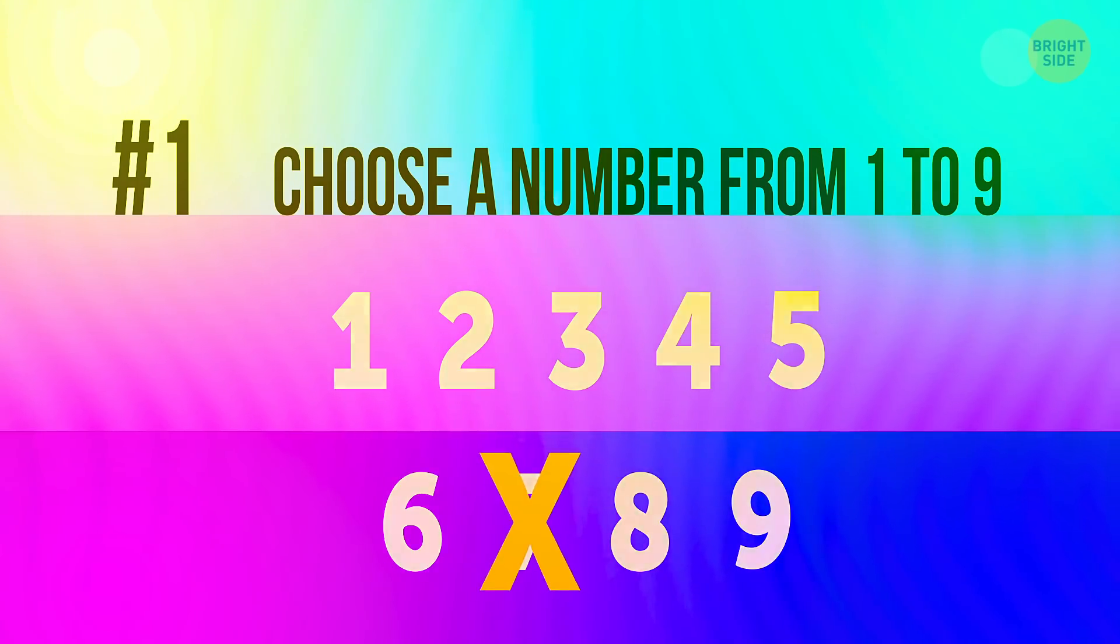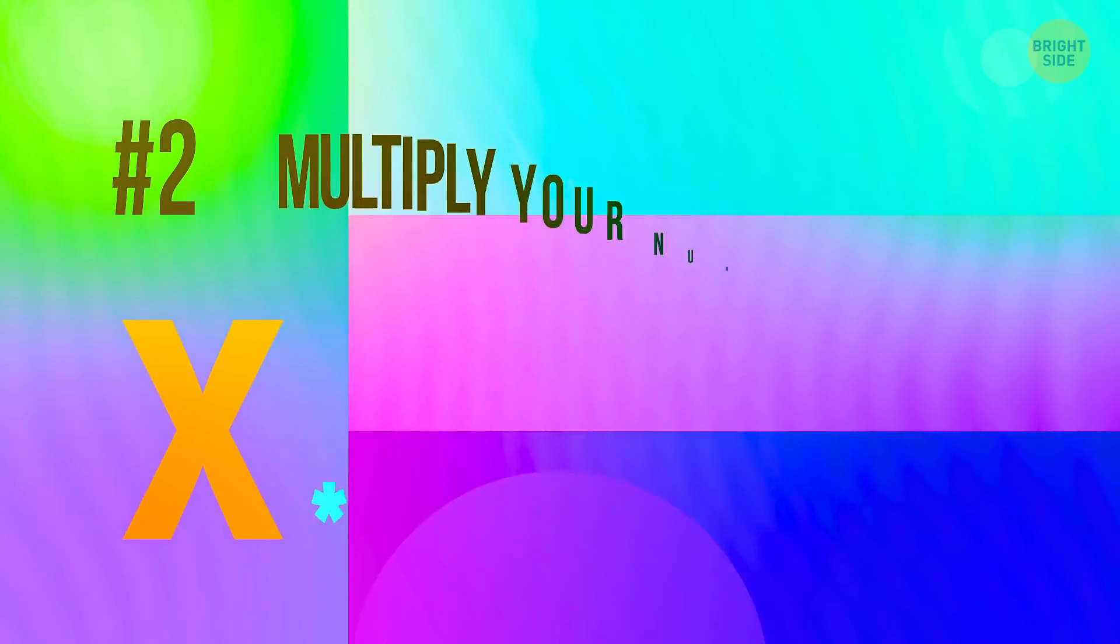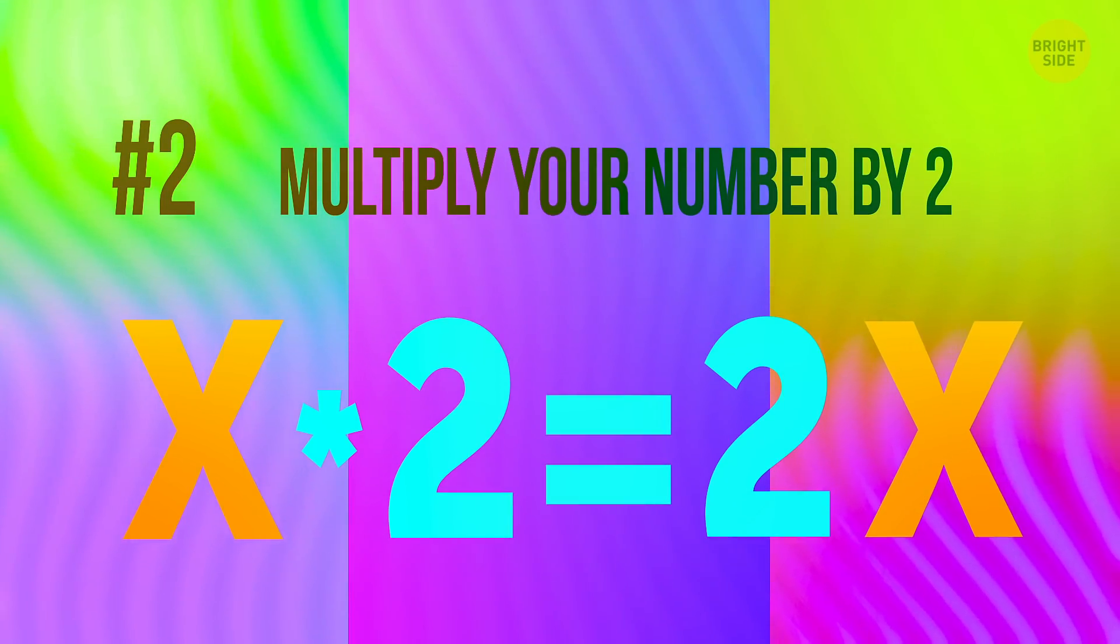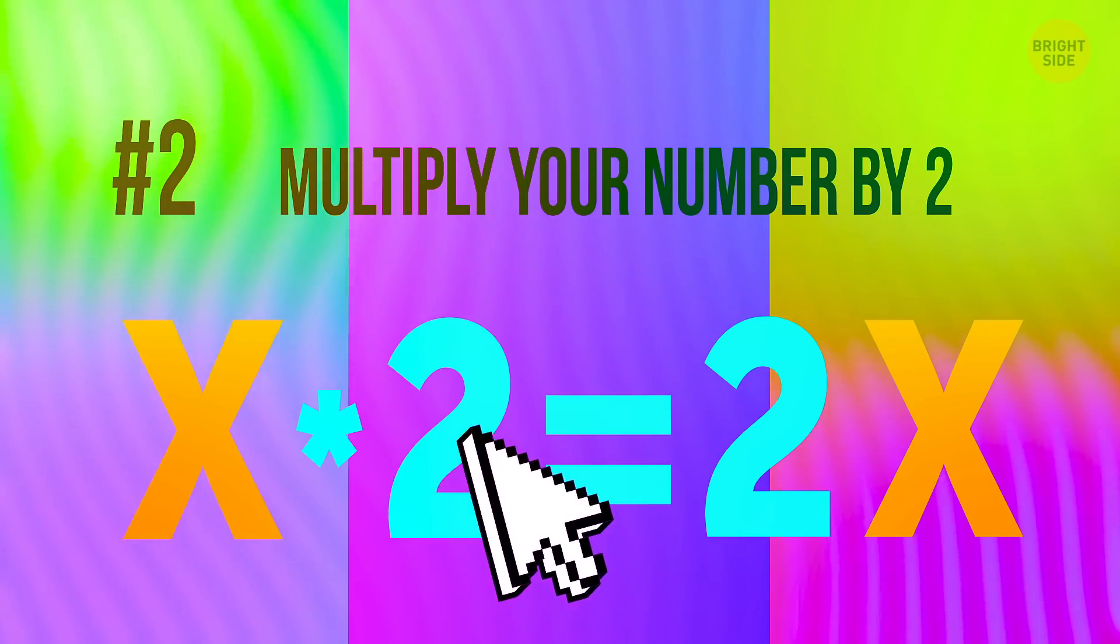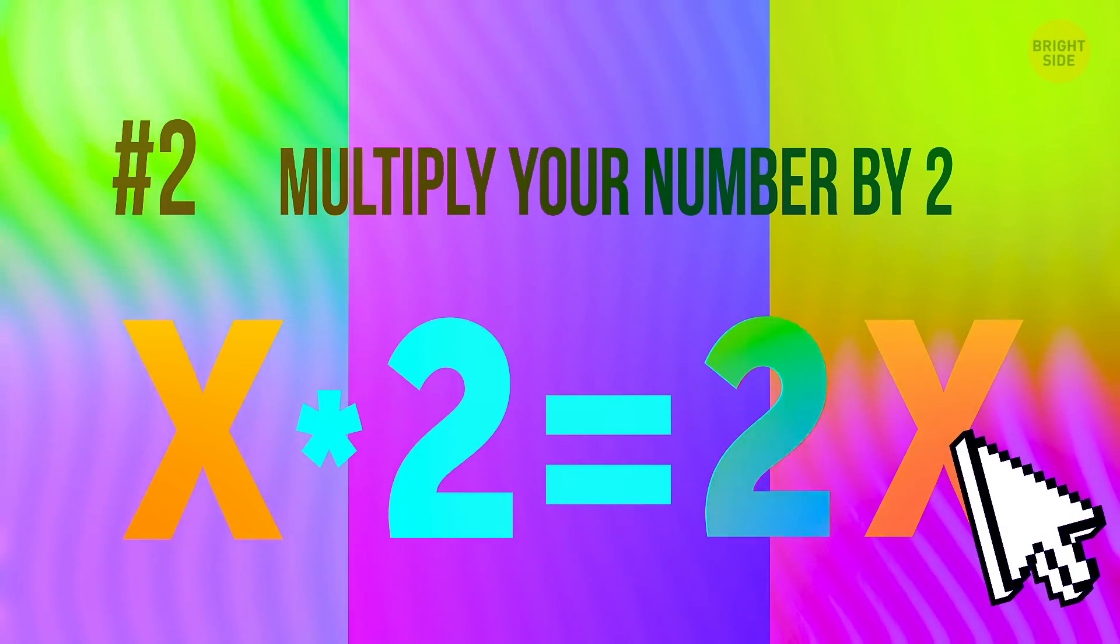Number 2. Multiply your number, which we've dubbed X, by 2. So, X multiplied by 2. Well, that's simple. I can do that without touching my calculator.